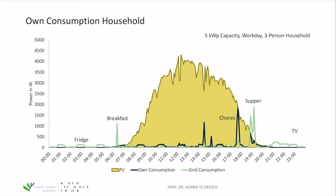Here you can see a typical own consumption situation for a household. The green curve represents electricity taken from the grid, the blue curve represents own-consumed electricity from the PV system, and the yellow curve shows the energy production of a PV system over one summer day. The PV system has a capacity of five kilowatt peak, and this example looks at a working day with a three-person household.